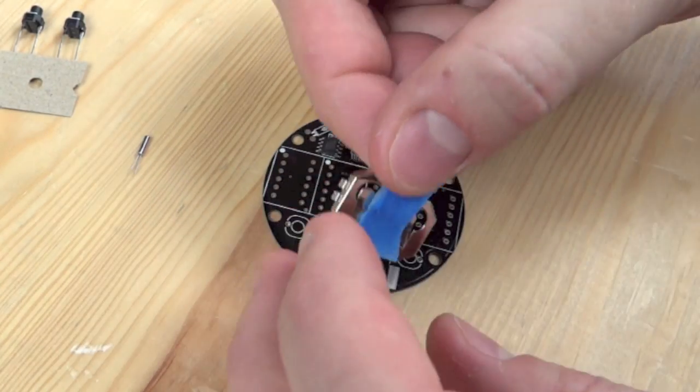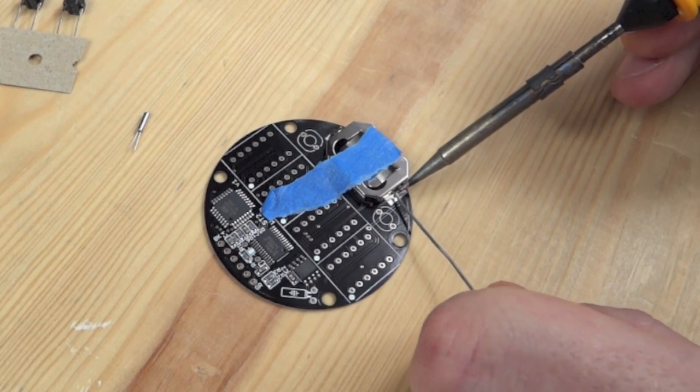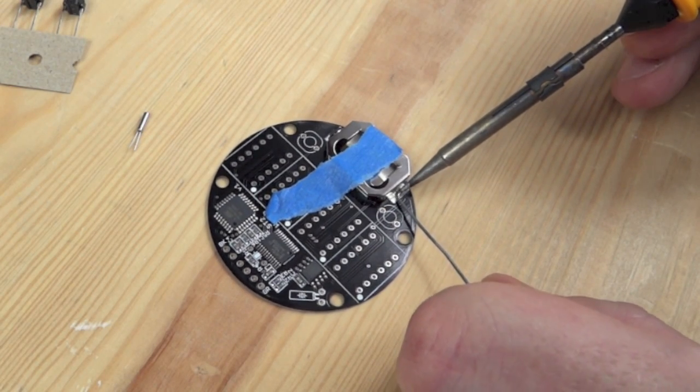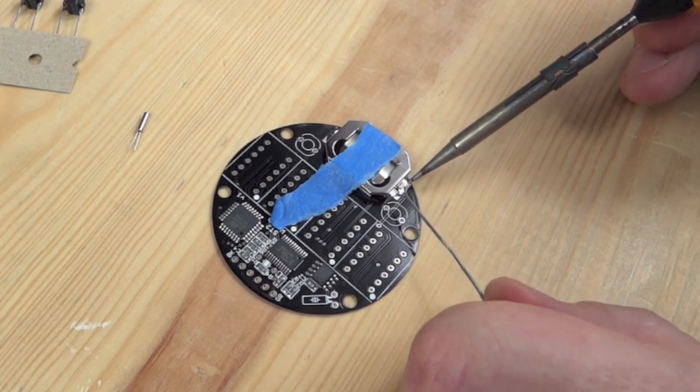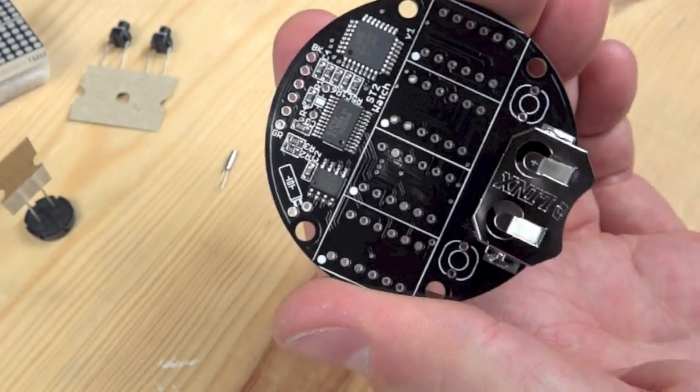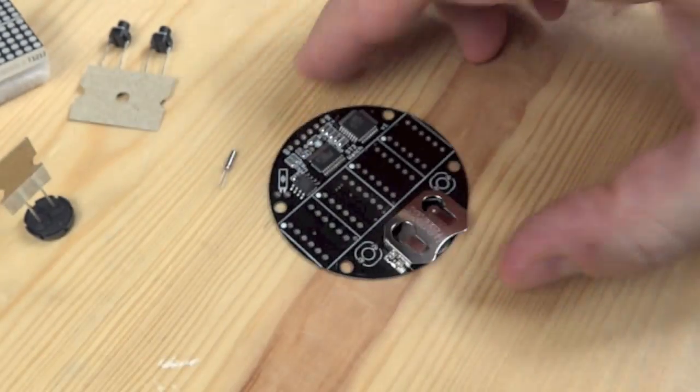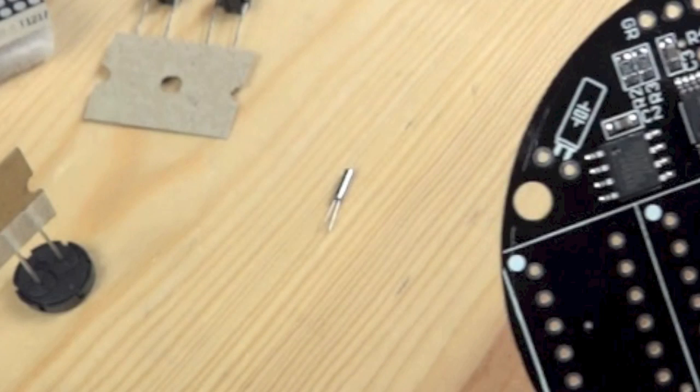Now first thing is, attach the battery holder. So put a bit of tape on that, solder both sides of that, and we're off and running. Take that tape off, see if it stays put. Yes, right, good. So, 1% of the way there.